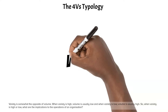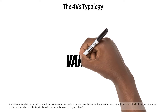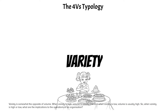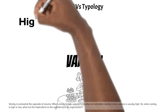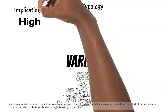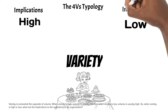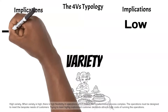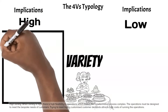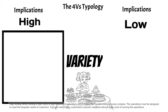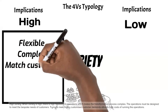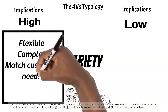Variety is somewhat the opposite of volume. When variety is high, volume is usually low, and when variety is low, volume is usually high. When variety is high, there is high flexibility in operations, which makes the transformation process complex. The operations must be designed to meet the bespoke needs of customers. Trying to meet highly customized customer demands attracts high costs of running the operations.